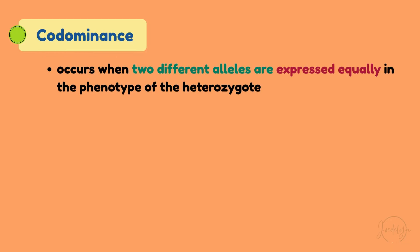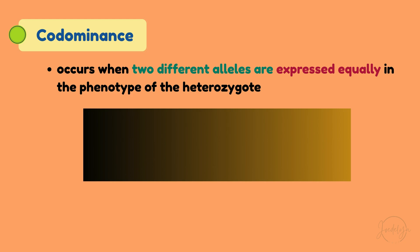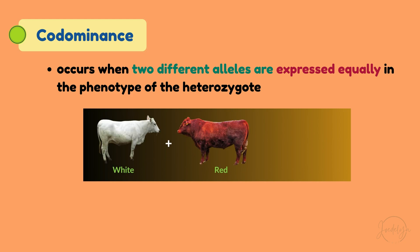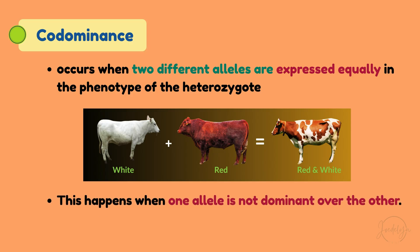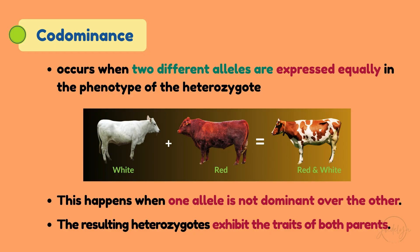Codominance occurs when two different alleles are expressed equally in the phenotype of the heterozygote. For instance, if we cross a white cattle with a red cattle, we don't get pink — we get a red and white spotted cattle. This happens when one allele is not dominant over the other. The resulting heterozygotes exhibit the traits of both parents, a perfect example of which can be seen in some breeds of cattle.